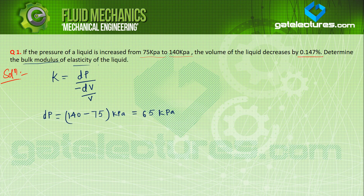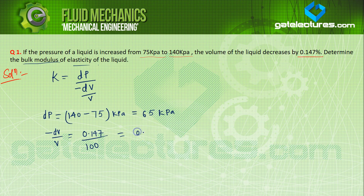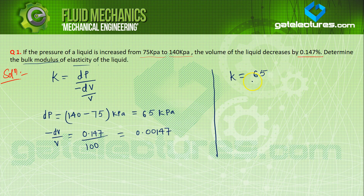Pressure is always compressive in nature, so the volume will always decrease. That's why we take the sign as minus dV over V. The minus dV over V is given as 0.147% in percentage. To convert: dV over V into 100 equals 0.147, so minus dV over V equals 0.00147. To find bulk modulus, K = dP over (minus dV over V), so K = 65 kPa upon 0.00147.